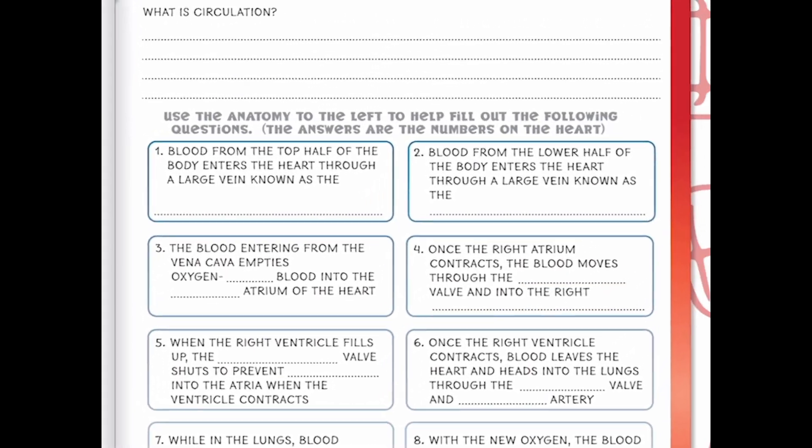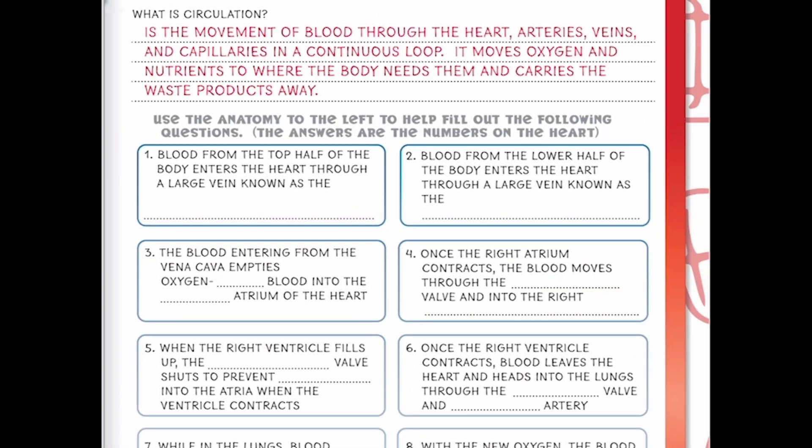Let's define circulation. Circulation is the movement of blood through the heart, arteries, veins, and capillaries in a continuous loop. It moves oxygen and nutrients to where the body needs them and carries waste products away. We just heard there are nutrients and oxygen, so now we need to understand how this is part of circulation. We're going to start as if our blood doesn't have any oxygen but does have carbon dioxide.